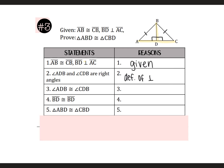Notice right here I have perpendicular — the next reason is the definition of that word. The next statement says angle ADB is congruent to angle CDB, and that's because all right angles are congruent. When you have perpendicular, you have to have those two statements and reasons in a row. And then BD is congruent to BD because it's reflexive — it's a line that both triangles share.